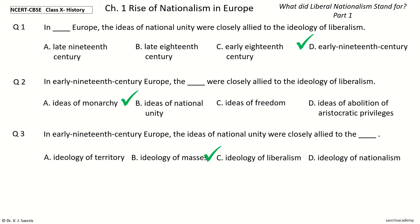And the answer is ideology of liberalism. So, in early 19th century Europe, the ideas of national unity were closely allied to the ideology of liberalism.